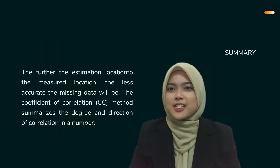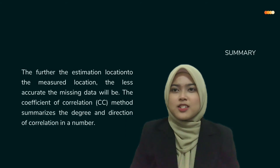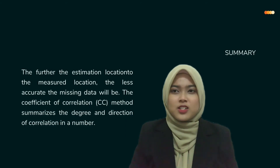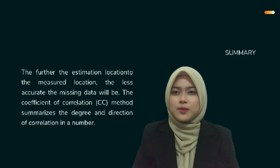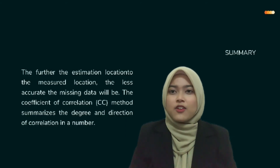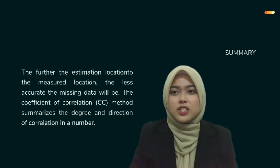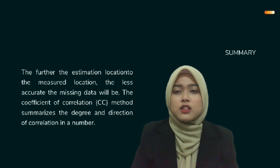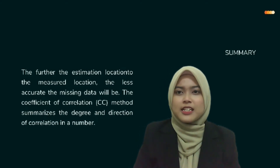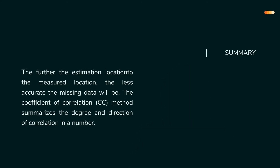The further the estimation location is from the measured location, the less accurate the missing data will be. The coefficient of correlation (CC) method summarizes the degree and direction of correlation in a single number.